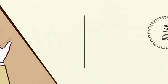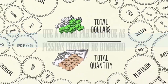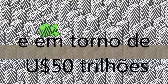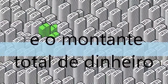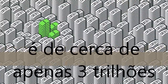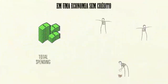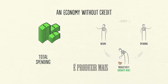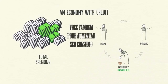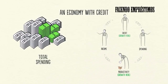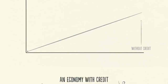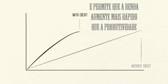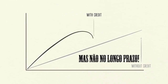The reality is that most of what people call money is actually credit. The total amount of credit in the United States is about $50 trillion and the total amount of money is only about $3 trillion. In an economy without credit, the only way to increase your spending is to produce more. But in an economy with credit, you can also increase your spending by borrowing. As a result, an economy with credit has more spending and allows incomes to rise faster than productivity over the short run, but not over the long run.